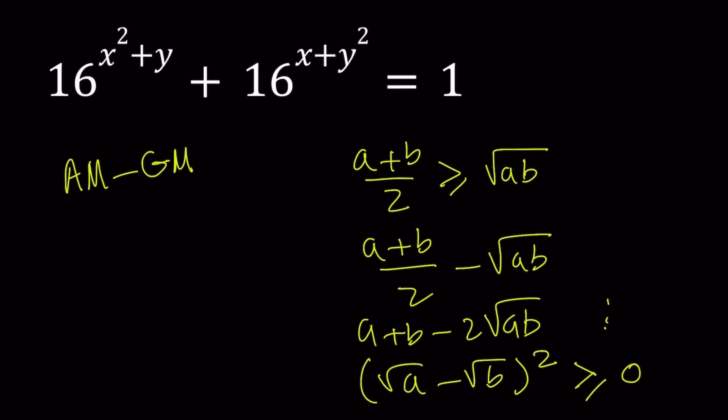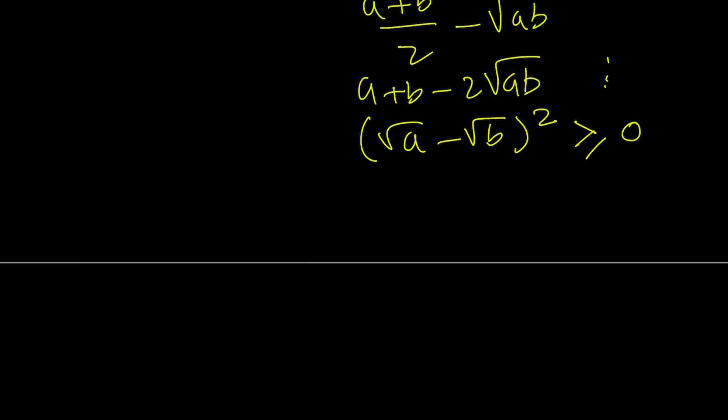So let's go ahead and see how we can use AM-GM to solve for an equation. We're going to use an inequality to solve an equation, which is, I think, interesting. So here's how AM-GM works for this equation. I'm going to take two numbers, 16 to the power of x squared plus y, and 16 to the power of x plus y squared. And I'm going to take their arithmetic mean, and it's supposed to be greater or equal to their geometric mean, which is the square root of their product.